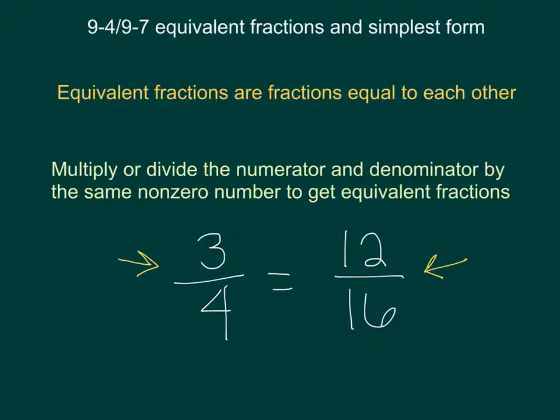Now, simplest form would be the 3 fourths because 12 over 16 can be divided by something to get it in the simplest form. Simplest form is when you cannot divide the numerator or the denominator by any number other than 1 and itself.